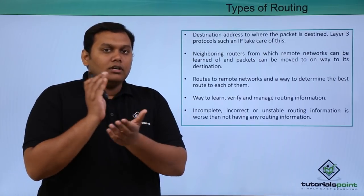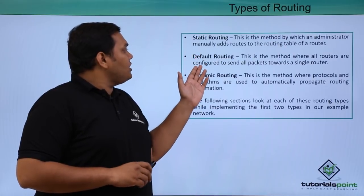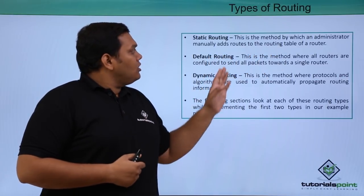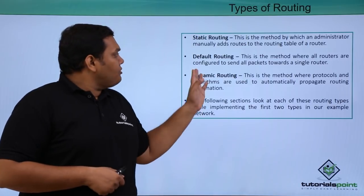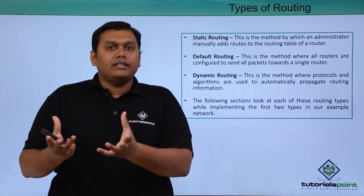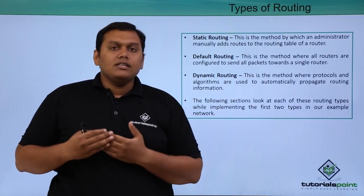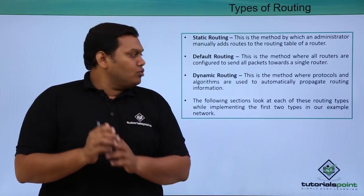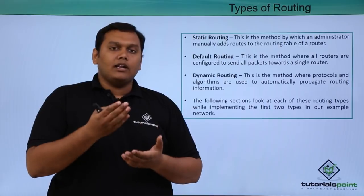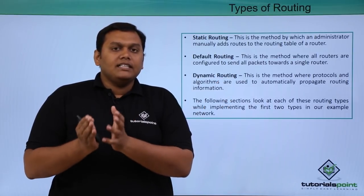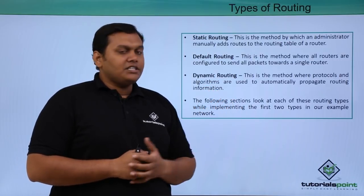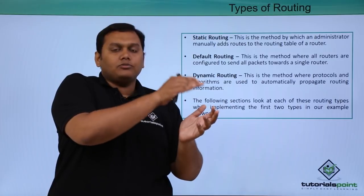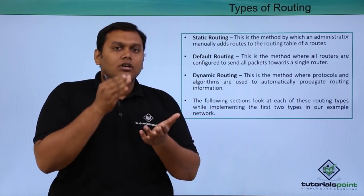There are three types of network routing. Static routing is a method by which an administrator manually adds the route to the routing table of a router. Default routing is a method where all routers are configured to send packets towards a single router. Dynamic routing is a method where protocols and algorithms are used to automatically propagate routing information. In the following sections, we will see how static routing is used with examples of transferring packets from source to destination, as well as examples for default and dynamic routing.